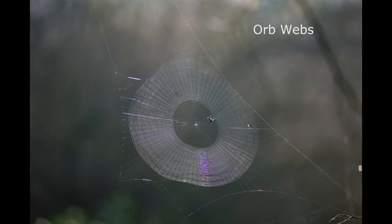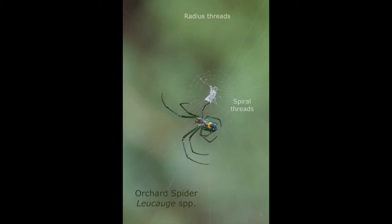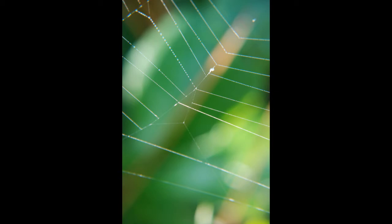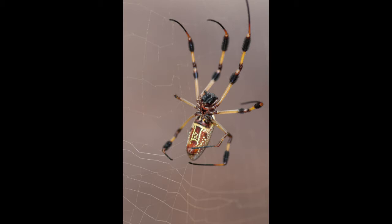Orb weaver spiders construct the flat circular webs that we often see around landscaping or strung between trees, fences, and even power lines. Spiders can control how sticky the web strands are depending on which abdominal glands they use. The radius threads are not as sticky — these are the support lines the spider walks on. The spiral threads are sticky with tiny droplets of what I call spider glue; these are the threads that entrap the prey. The tiny droplets are made up of highly entangled polymers. This female golden orb-web spider is attaching a strand of silk to a radius thread — you can see the silk coming out of her spinneret.